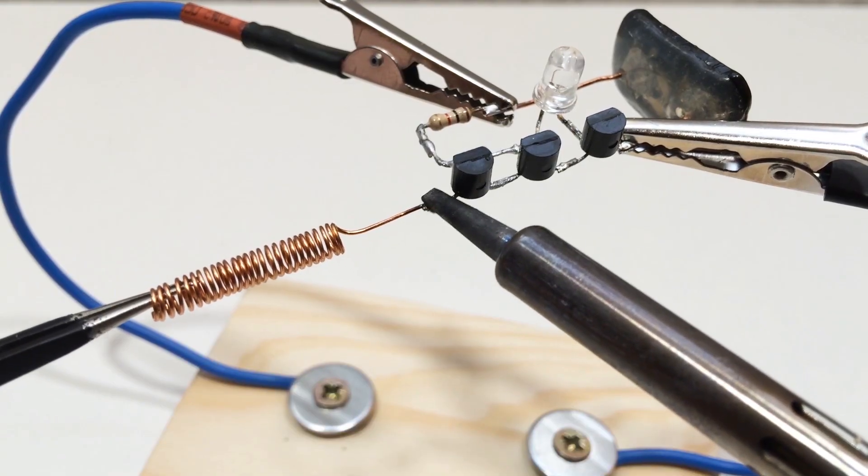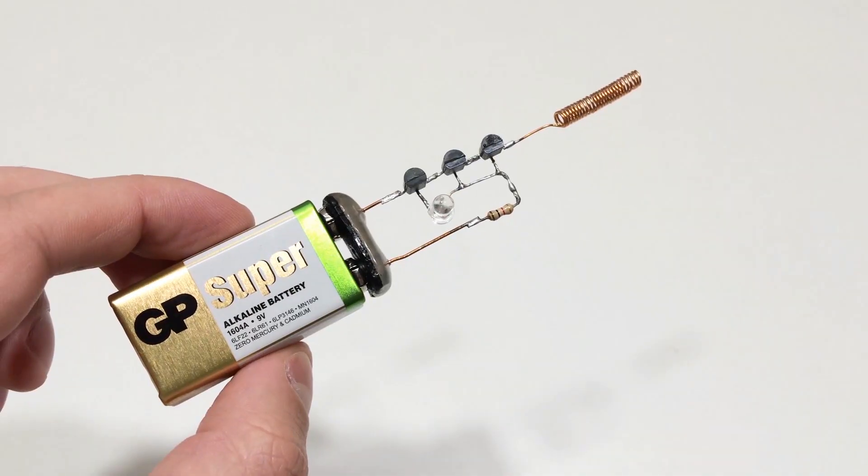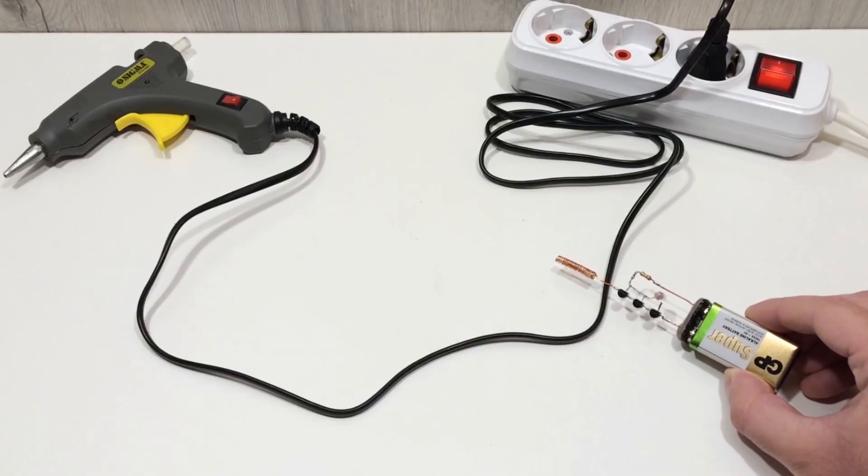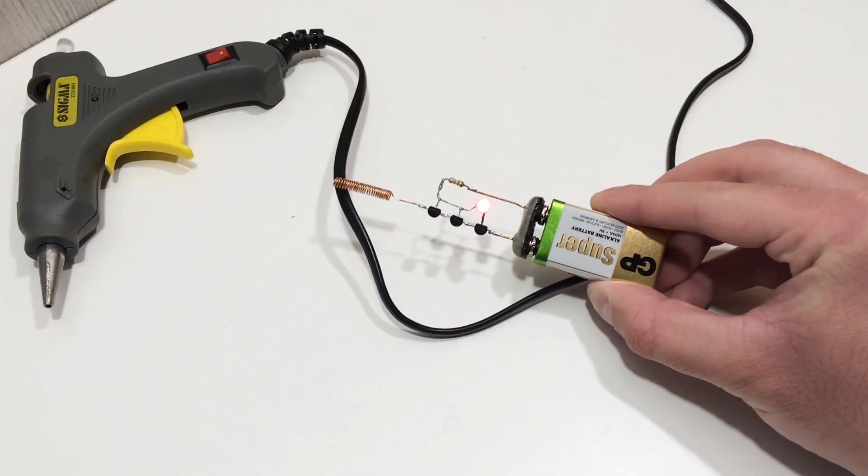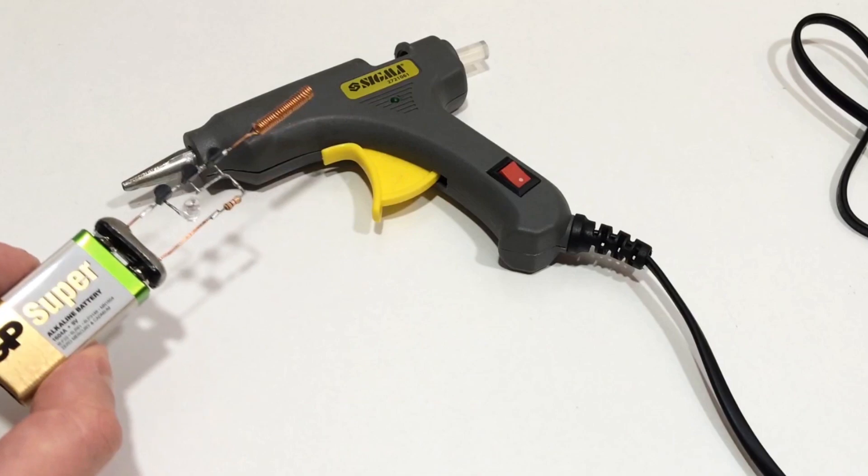Finally, we attach the 9-volt battery connector, solder it into the circuit, and power up the detector. So how does it work? The antenna coil senses electromagnetic fields from live wires in the wall. This weak signal is fed into the transistor chain, amplified step-by-step until the final transistor drives the LED.